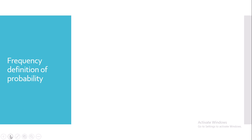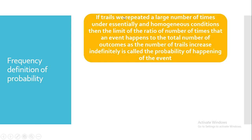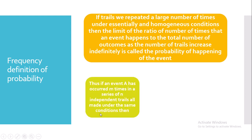Now let's move on to the frequency definition of probability. In the frequency definition of probability, we will be using the concept of statistical regularity. If the trials are repeated a large number of times under essential and homogeneous conditions, then the limit of the ratio of the number of times that an event happens to the total number of outcomes, as the number of trials increases indefinitely, is called the probability of happening of that particular event.